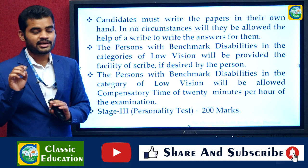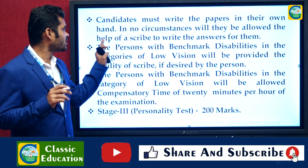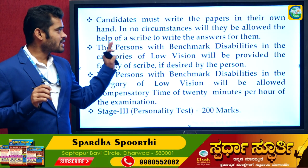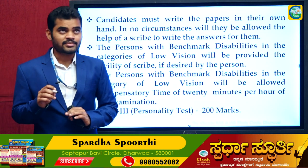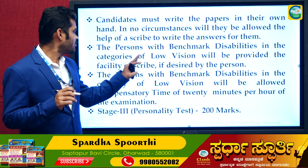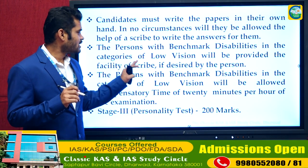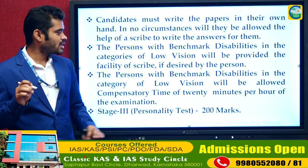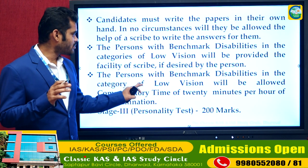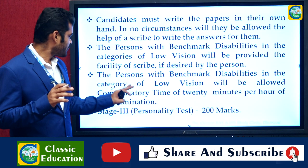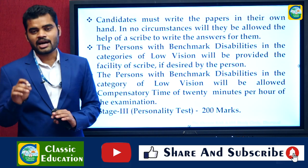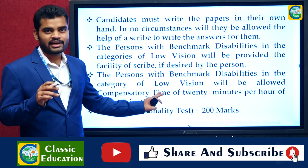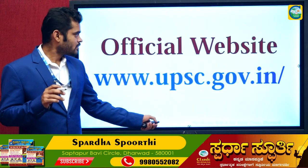For the Personality Test, candidates must write their papers in their own hand. In no circumstances will they be allowed the help of a scribe to write answers for them. However, Persons with Benchmark Disabilities in the category of low vision will be provided the facility of a scribe if desired, and will be allowed compensatory time of 20 minutes per hour of the examination.